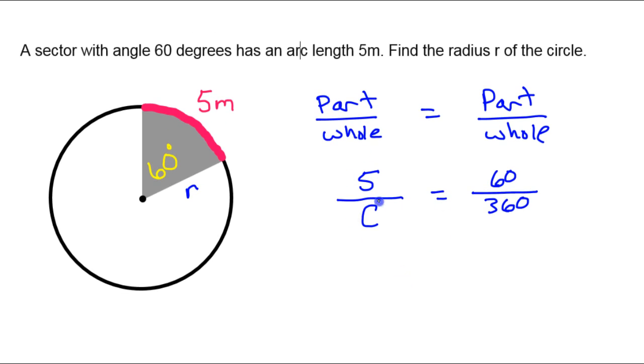So I should be able to very easily solve this for the circumference of the circle, and then I will use that to find the radius. So first of all, I'd like to reduce this. So the zeros, as I'm reducing, if I divide these both by 10, basically those zeros are gone. And then 6 goes evenly into 36, 6 times. So this reduces down to 1 sixth.